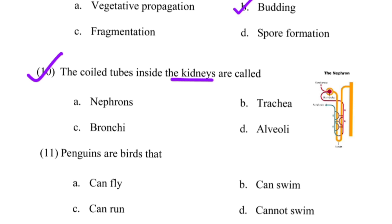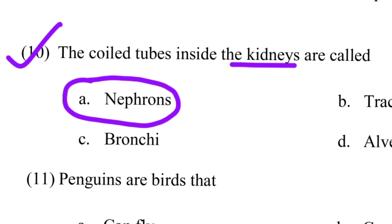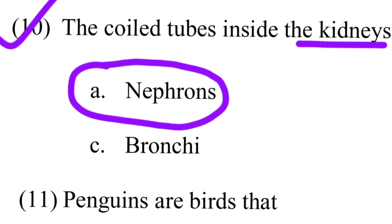Next question: The coiled tubes inside the kidney are called dash. Options are nephrons, trachea, bronchi, and alveoli. The correct answer is option A — nephrons. Trachea, bronchi, and alveoli are all related to the lungs, not the kidney. Nephrons are the structural and functional unit of the kidney.